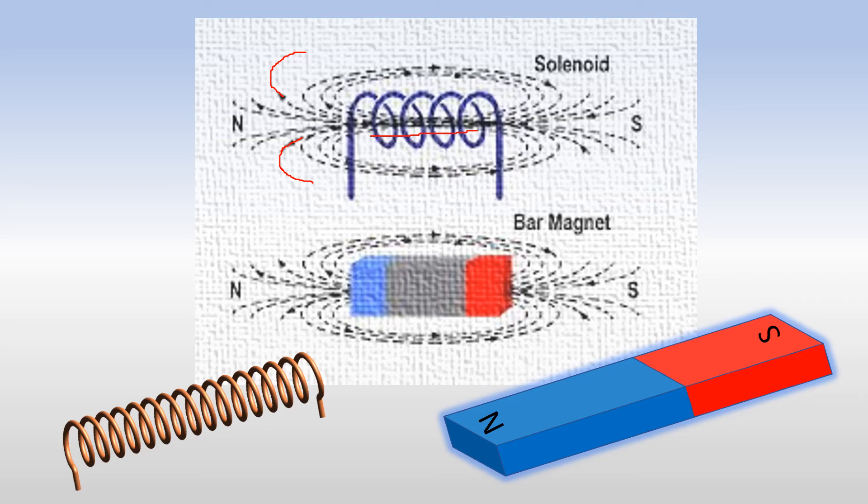Now if you see the diagram, it will be very clear for you that they move from the north pole towards the south pole.